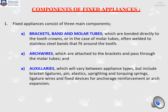Components of fixed appliances: fixed appliances consist of three main components. The first is brackets, bands, and molar tubes, which are bonded directly to the tooth crown, or in the case of molar tubes, welded to a stainless steel band that fits around a tooth. Secondly, the archwire, which is attached to the brackets and passed through the molar tubes. Finally, the auxiliaries, which vary between appliance types but include bracket ligatures, pins, elastics, uprighting springs, coil springs, ligature wires, and fixed devices for anchorage reinforcement or arch expansion.